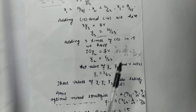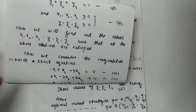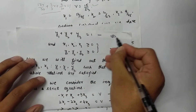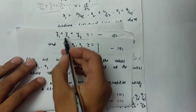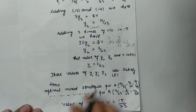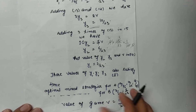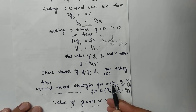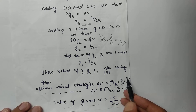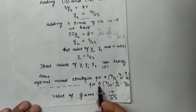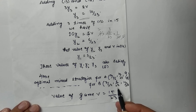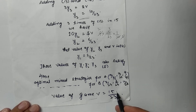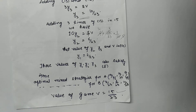I will put the values of y1, y2, y3 into equation 8 to check whether the condition is satisfied. When I substitute, I get the desired result. Hence, the optimal mixed strategies for player A are x1 equals 17/46, x2 equals 10/23, and x3 equals 9/46. The optimal mixed strategies for player B are y1 equals 7/23, y2 equals 6/23, and y3 equals 10/23. The value of the game is 15/23. Friends, if you like my video please subscribe to my channel and share this video. Thanks for watching.